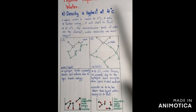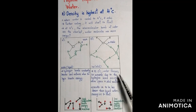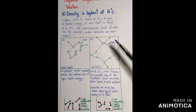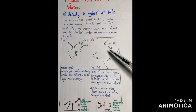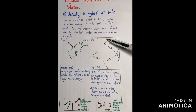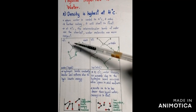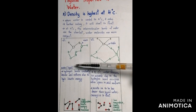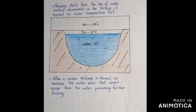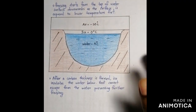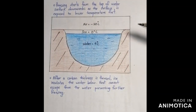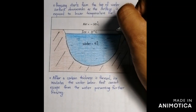At 0°C, water exists in a solid state. As it freezes, ice expands because the hydrogen bonds occupy more space in the solid medium. The hydrogen bonds in ice are more stable, making ice less dense than liquid water and causing ice to float. When temperature is low, kinetic energy decreases so hydrogen bonds do not break and reform constantly. Freezing starts from the top surface downwards, as the surface is exposed to lower temperatures first.